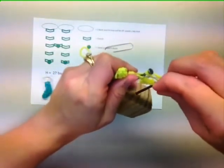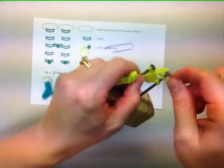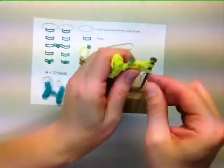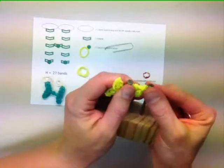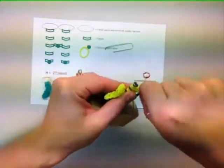We'll continue on our side part with two more regular stitches, two bands each. And then we will close that side of the H with a single band and tie it off with a slip knot. You will end your project with a slip knot on both sides.